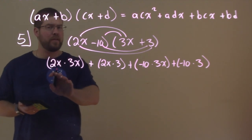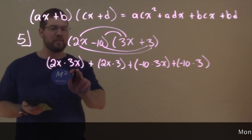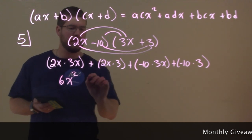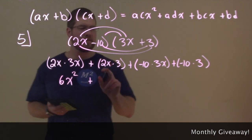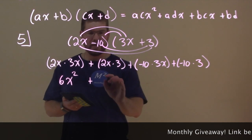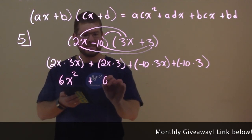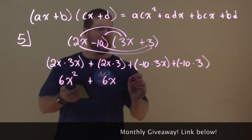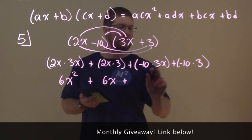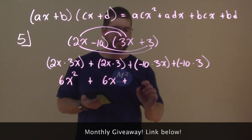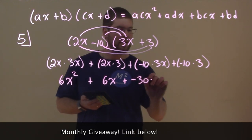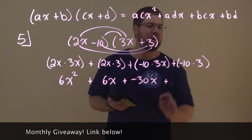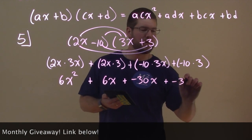So let's multiply and simplify. 2X times 3X is 6X squared. Plus 2X times 3 is 6X. Then we have plus negative 10 times 3X, which is negative 30X. And lastly, negative 10 times 3 is negative 30.